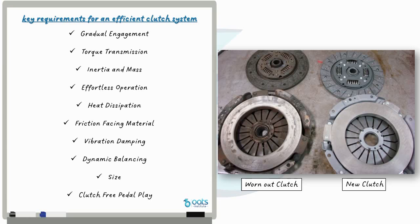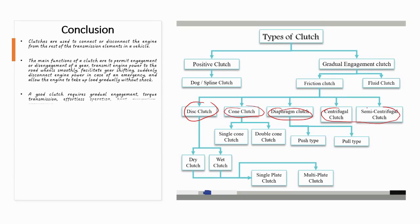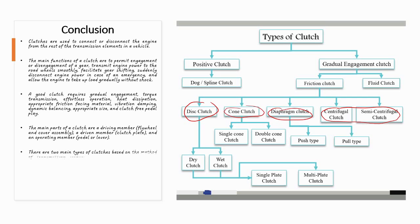In conclusion, clutches come in various types to cater to different needs and applications. From the simplicity of the disc clutch to the efficiency of the cone clutch, the reliability of the diaphragm clutch, and the unique operating principle of centrifugal and semi-centrifugal clutches, each type has its advantages and limitations. Understanding the different types of clutches is essential for automotive enthusiasts and engineers alike, as it allows us to appreciate the intricacies of power transmission and the engineering behind efficient gear shifting. Whether you are driving a car or exploring the world of mechanical engineering, clutches play a vital role in the seamless operation of our machines.